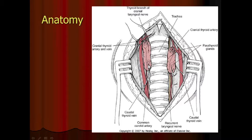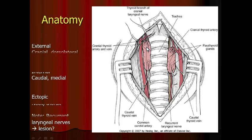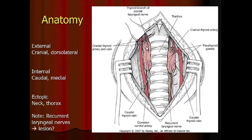Here is the thyroid gland. See these two circles? There's a circle or oval that has a black line, and the other one is more caudal. There is the external parathyroid, which is definitely cranial, usually dorsolateral — there could be a significant amount of variation. And then more caudally is the internal parathyroid.